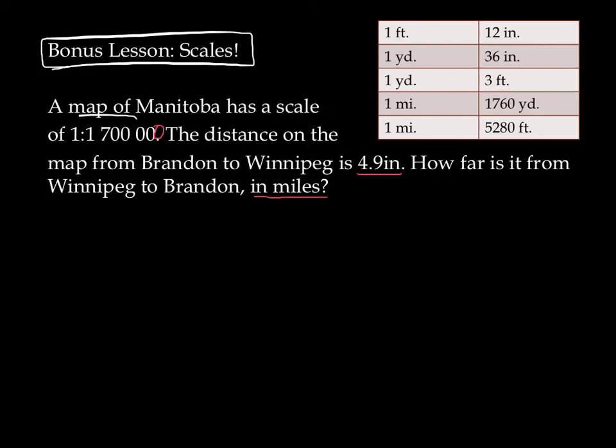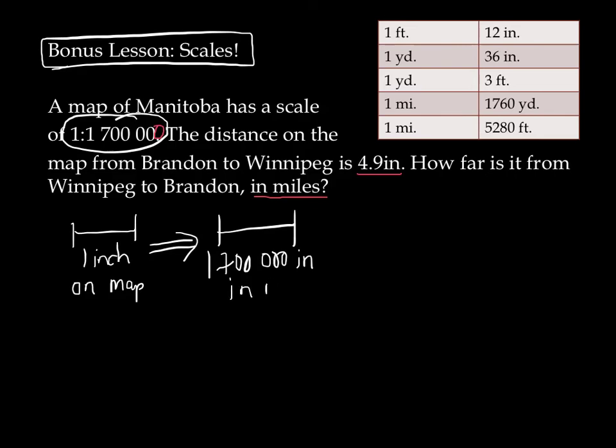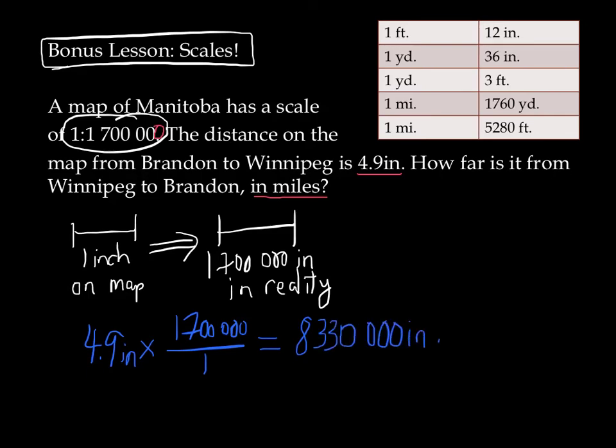Here's how a scale works. This scale of 1 to 1.7 million really means that if on the map we have 1 inch on the map, in reality, that same distance is 1,700,000 inches in reality. So that's what a scale does for us. So let's go ahead and answer this problem. If we have 4.9 inches on the map times 1,700,000 over 1, that's our scale. Well, let's see. I guess that's a really big number. It gives us 8,330,000 inches in reality. So this is the real distance from Winnipeg to Brandon.